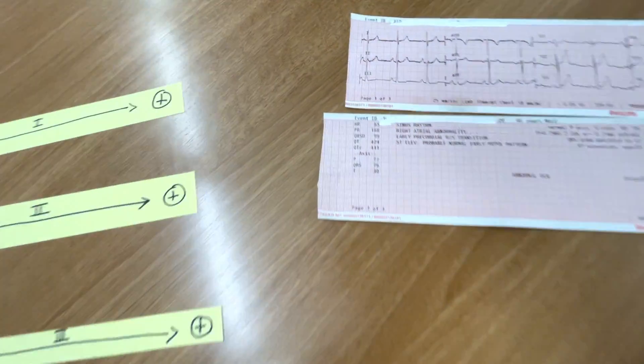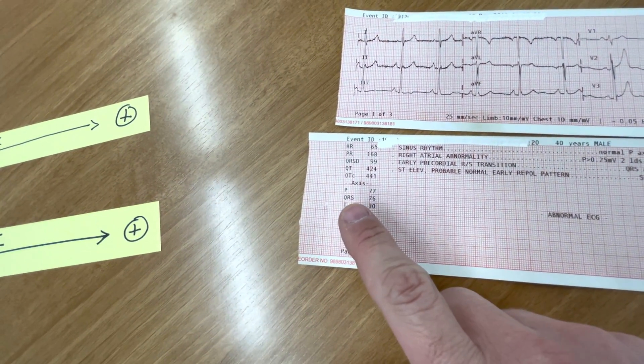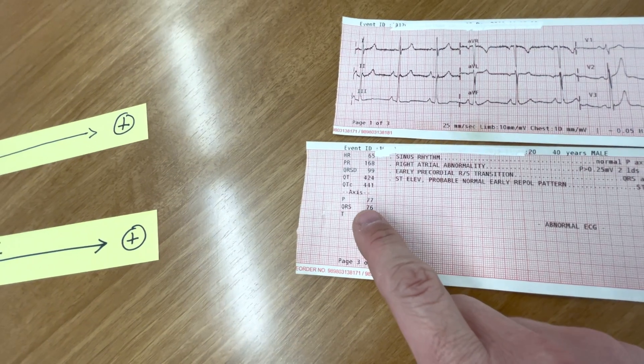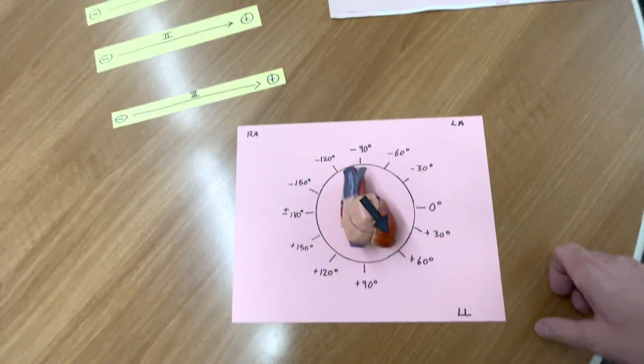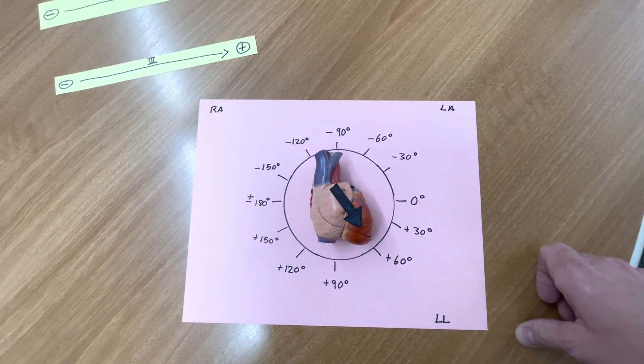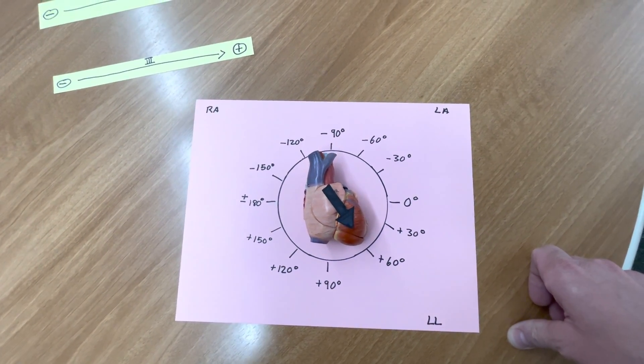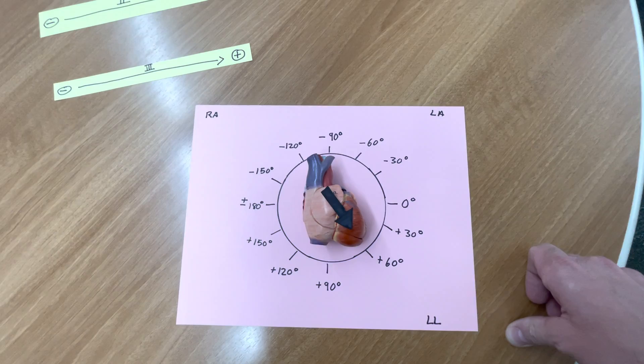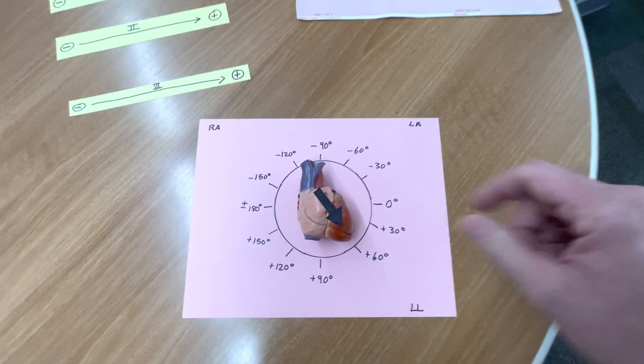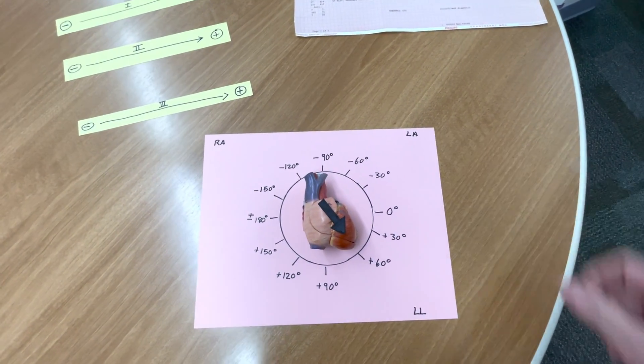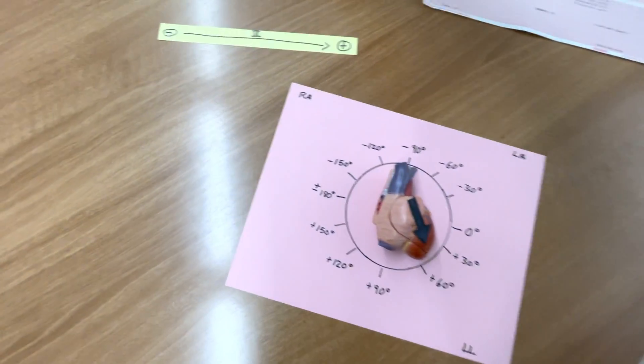Specifically, what we're talking about is the QRS axis or the Q-axis. That little number right there, 75 in this case. That is what normal axis is. And the way that we can conceptualize this further is by looking at the limb leads.